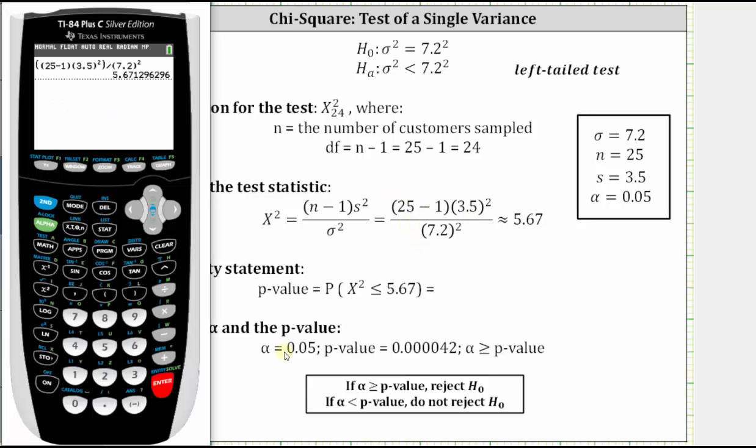Notice how we do get approximately 5.67 for chi-square. Also notice how I did put parentheses around the numerator. And since chi-square is approximately 5.67, the p-value is equal to the probability that chi-square is less than or equal to 5.67.